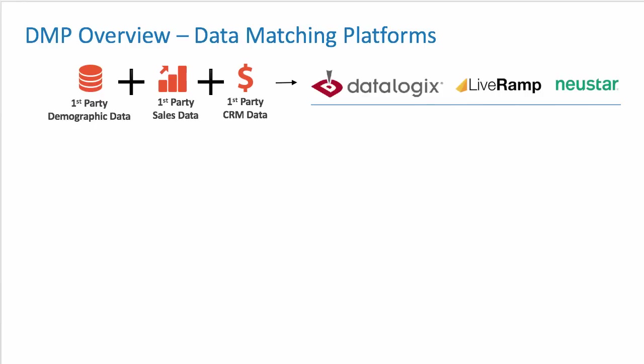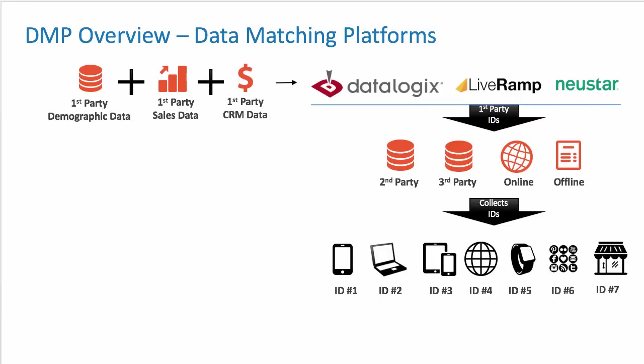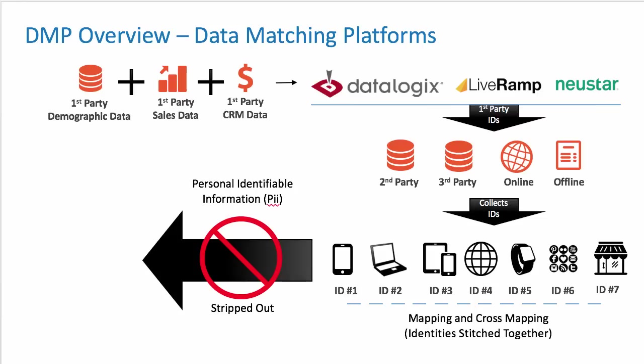Platforms such as DataLogix, which was just acquired by Oracle, LiveRAMP, NewStar, and others. From there, it takes the first-party IDs and runs them through second and third-party data, along with online and offline data, to come up with an identity schema. From there, it tries to map and cross-map these first and third-party data identities, and then tries to stitch them all together. After that, it removes and strips out any PII information, and finally sends it back to the DMP.